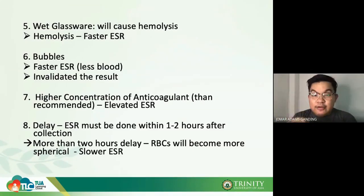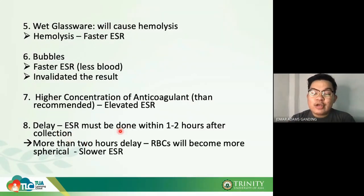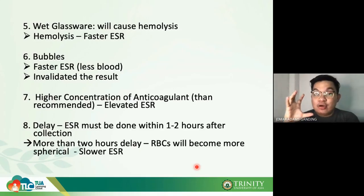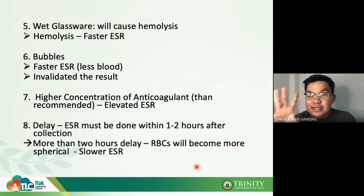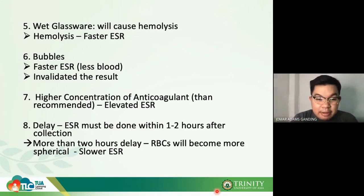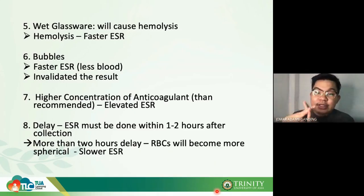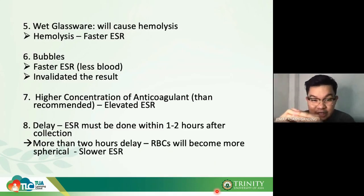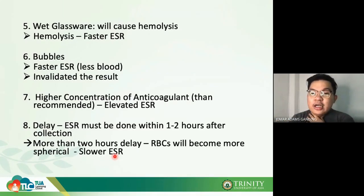Delay in performing ESR — for example, more than two hours after collection — causes RBCs to swell, leading to spherocyte formation (poikilocytosis), which results in slower ESR. All of these — higher anticoagulant concentration, wet glassware, and bubbles — are associated with faster ESR, while delay causes slower ESR.